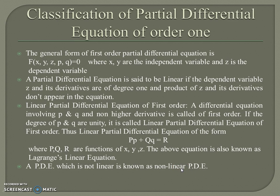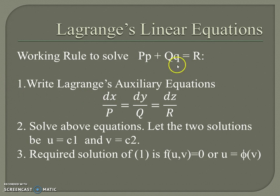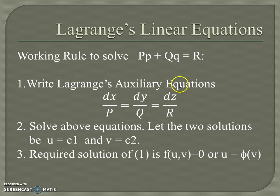Now we will discuss the working rule for Lagrange's linear equation of the form Pp + Qq = R. The first step is to write Lagrange's auxiliary equations: dx/P = dy/Q = dz/R. Next, we solve these auxiliary equations. Let the two solutions be u = c₁ and v = c₂.